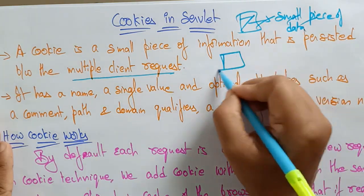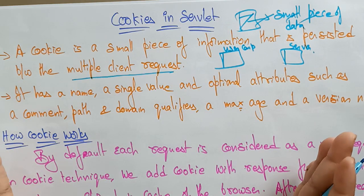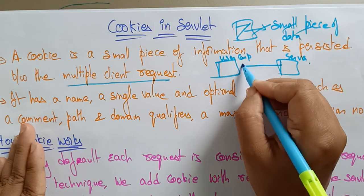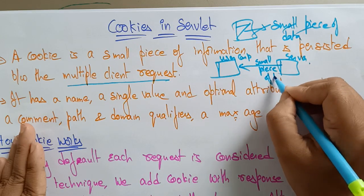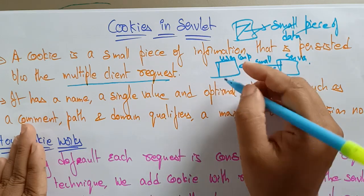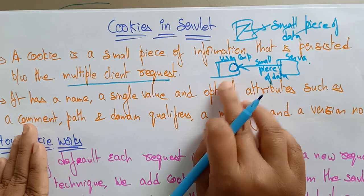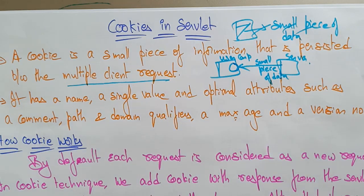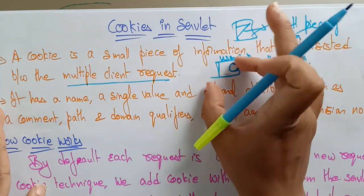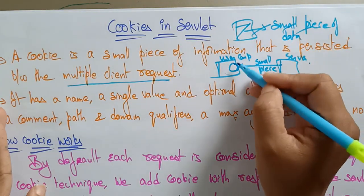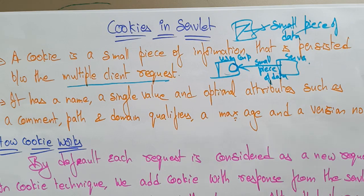Let's say this is the user's computer and this is the server. A cookie is a small piece of data sent from the website server and stored on the user's computer by the user's web browser while the user is browsing. Until the cookie is signed out or deleted, it will be stored in the user's computer — in the hard disk or whatever storage device — wherever you can store those cookies.